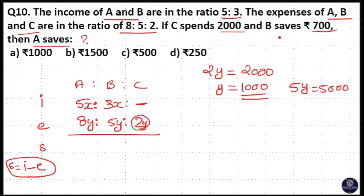Here B saves 700. That means 3x minus income minus expenditure is equal to savings. 3x minus 5y. B's saving is equal to 700.